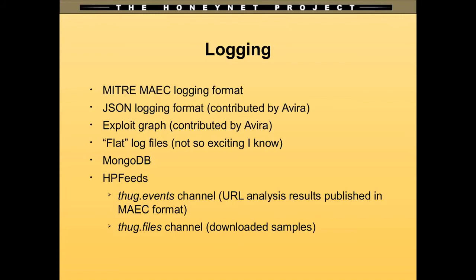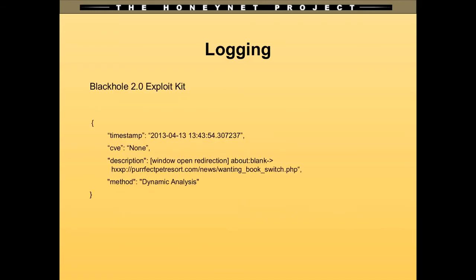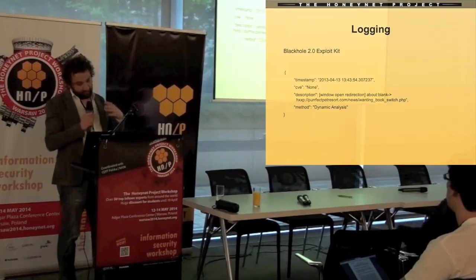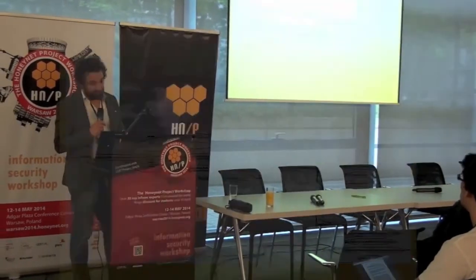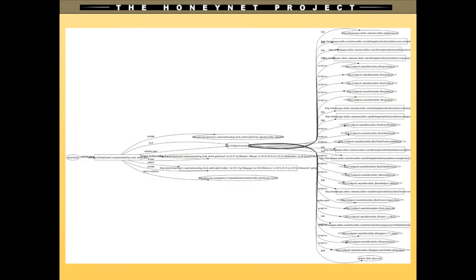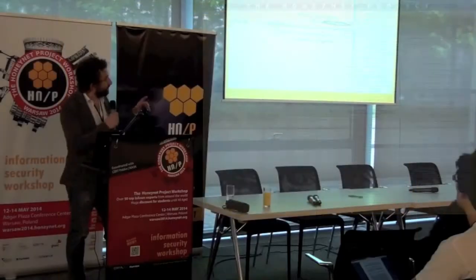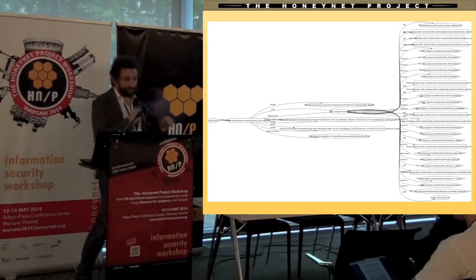There are details about the logging format which I'll skip, but here are examples of logging output. This comes from an analysis of a Black Hole exploit kit — a snippet taken from the JSON output. There are even exploit graphs which are useful for understanding redirection chains and getting the big picture of what happened during the analysis.